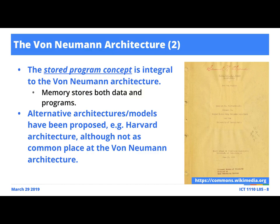This notion of the stored program concept arose in the mid-1940s, and this architecture is named after a human being. Prior to the proposal of this stored program concept, instructions and data were stored in two separate units. But when the stored program concept was introduced, these people said it would be more efficient and effective if we actually stored data and instructions in the same location.